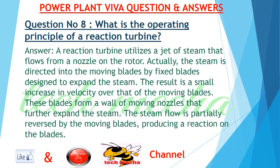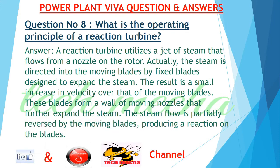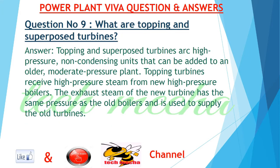Question number 8: What is the operating principle of a reaction turbine? A reaction turbine utilizes a jet of steam that flows from a nozzle on the rotor. The steam is directed into the moving blades by fixed blades designed to expand the steam. The result is a small increase in velocity over that of the moving blades. These blades form a wall of moving nozzles that further expand the steam. The steam flow is partially reversed by the moving blades, producing a reaction on the blades.